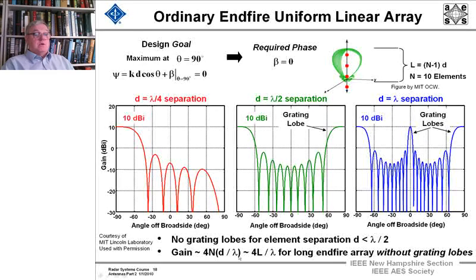And again, the gain is approximately 4L divided by lambda for long end fired arrays without grating lobes.